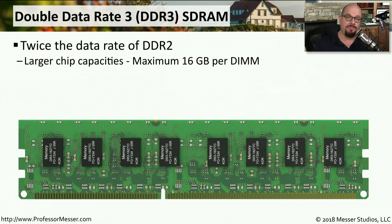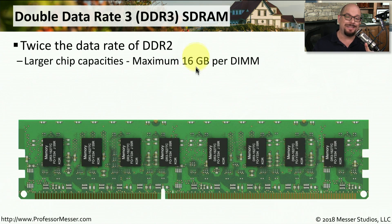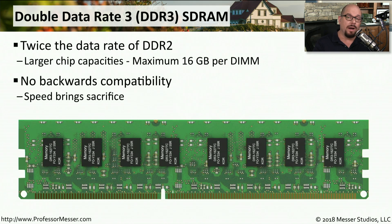The generation of memory after DDR2 is DDR3, or double data rate 3. DDR3 RAM has twice the data rates of DDR2, providing greatly improved performance for systems that support it. It also increased the maximum size on a single DIMM to 16 gigabytes of memory. And again, if you have a motherboard that requires DDR3 memory, you must use a DDR3 memory module — you can't take DDR2 modules from an older system and move them into a DDR3 system, as they won't fit into the module slots at all.